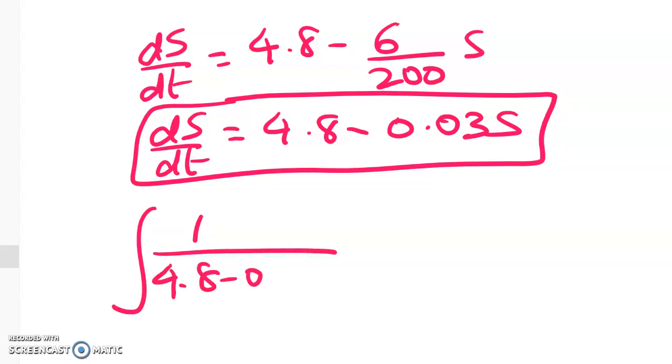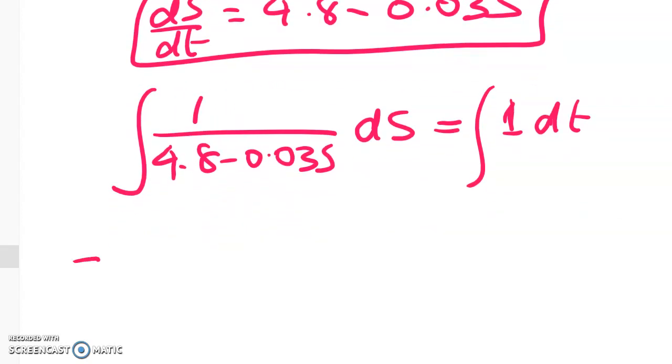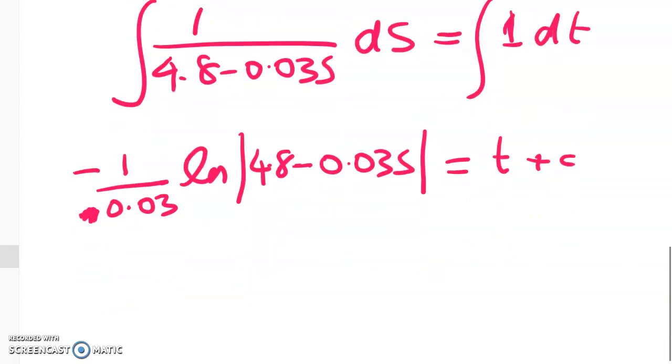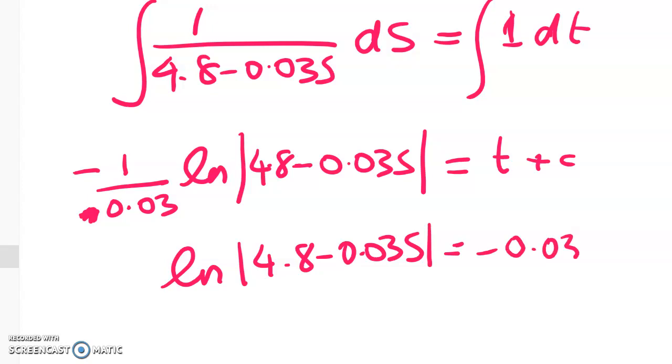So separating variables, we've got this. 1 over 4.8 minus 0.03S dS is equal to 1 dt. And we'll integrate that as well. Here we get negative 1 over negative 0.03, don't need two negative signs, times the natural log of 4.8 minus 0.03S equals t plus c. So the log of 4.8 minus 0.03S is equal to negative 0.03T plus c dash.